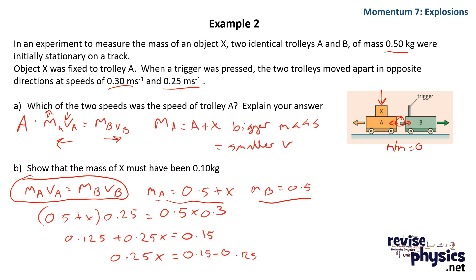we can substitute those in to our conservation of momentum equation, expand out the brackets to give us this, and then take our 0.125 over to this side to allow us to find x.